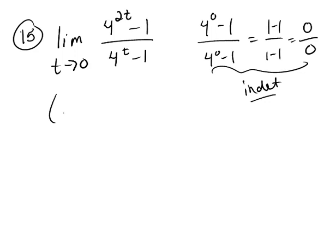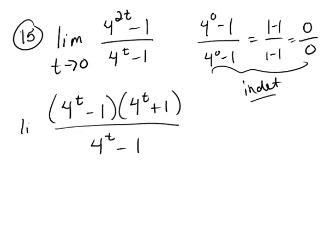You could think of this as 4 to the t minus 1 times 4 to the t plus 1, because if you foil this out now, remember when you multiply and the bases are the same, you add the exponent, so t plus t makes the 2t there. So that was pretty sneaky, recognizing that that's how you would factor that problem.